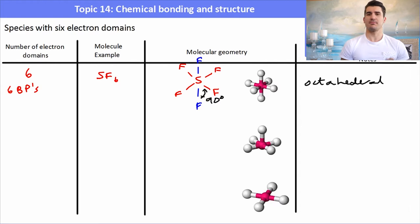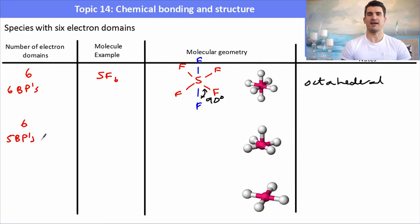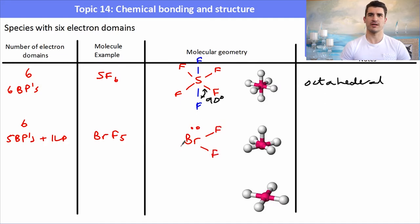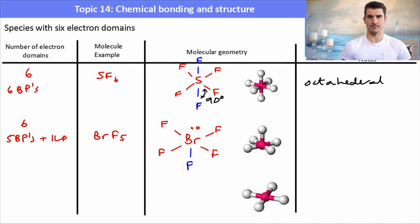With 6 electron domains, 5 bonding pairs and 1 lone pair: an example is BrF5. We get a square base with 1 bond coming out the top — a square planar arrangement of fluorines with one extra fluorine above. This looks like something from Egypt — it's a square-based pyramid. All of the bonds are still at 90 degrees.